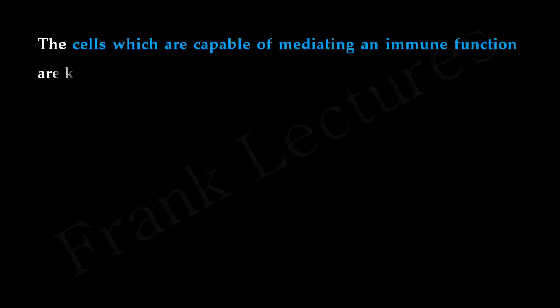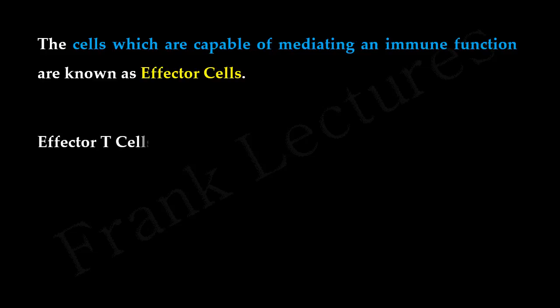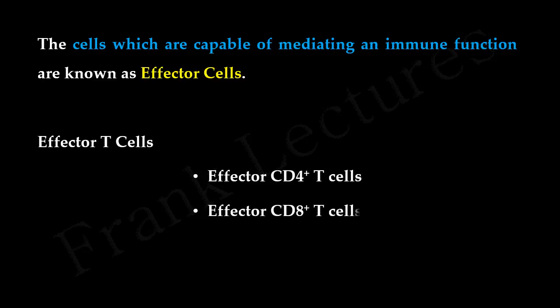Effector cells are cells which are capable of mediating an immune function. This means they can mediate the removal of antigens or the cause of infection without the need for further differentiation. Effector T-cells are of two types: effector CD4 positive T-cells and effector CD8 positive T-cells. These effector T-cells perform their function as soon as they encounter their specific antigen on the cells. As a result of T-cell activation and differentiation, a large population of T-cells capable of responding to the antigen responsible for the infection is generated.